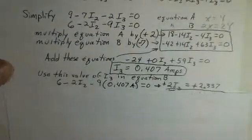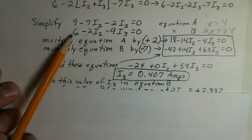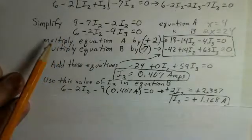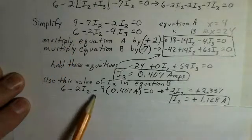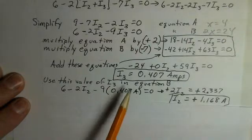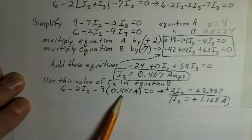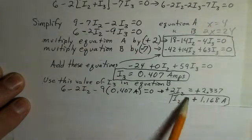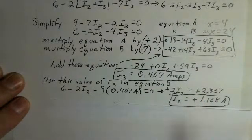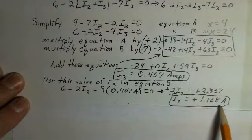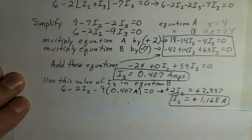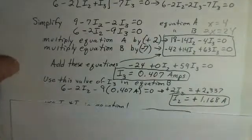So I'm going to use the second equation here, putting in the value for I3. So 6 minus 2 I2 minus 9 times the known value of I3. Now we just calculated it, 0.407. And we do the calculation, combine the numbers and we find that I2 is 1.168 positive. The I3 also came out to be a positive result. I'll comment on that in just a little bit.